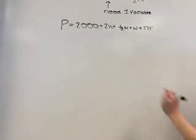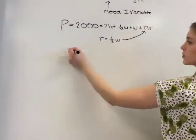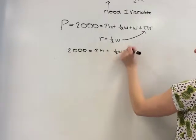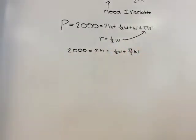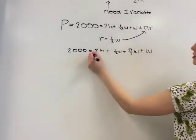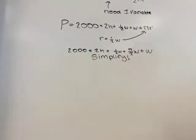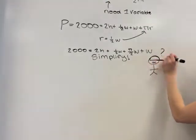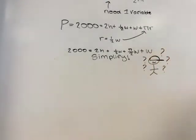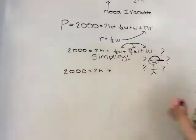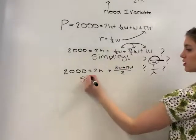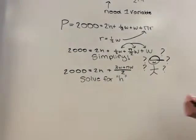This formula is P equals 2,000, which also equals 2H plus 1.5W plus W plus πr. Remember, we can already substitute 1.5W for R and simplify using 2 as a common denominator. Simplified, 2,000 equals 2H plus 3W plus πW over 2.